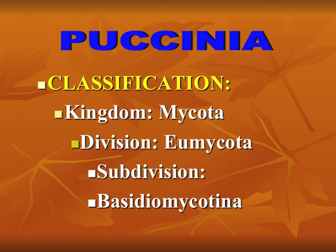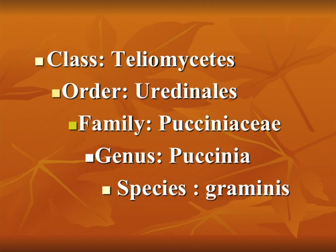Puccinia belongs to Basidiomycotina and the family Pucciniaceae. Puccinia is an obligate parasitic member and is cosmopolitan in distribution. Classification: Kingdom Mycota, Division Eumycota, Subdivision Basidiomycota, Class Teliomycetes, Order Uredinales, Family Pucciniaceae, Genus Puccinia.